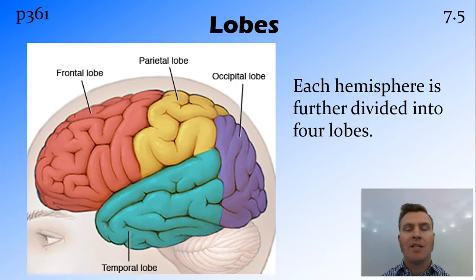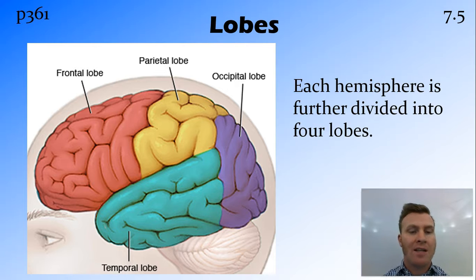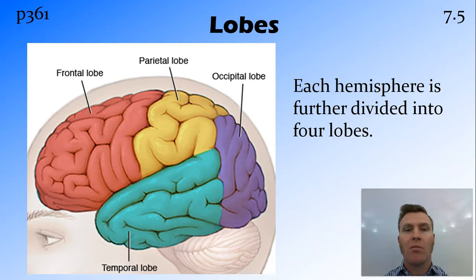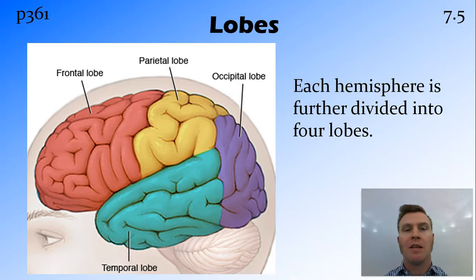The brain, or each hemisphere of the brain, is further divided into lobes. Going from front to back, we have the frontal lobe, the parietal lobe, and the occipital lobe at the back, and then around on the side we have the temporal lobe. This sits just above your ears at the temple.